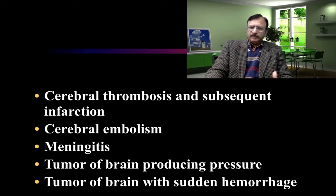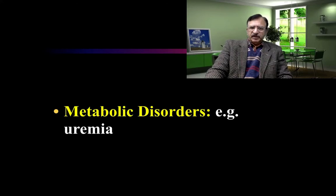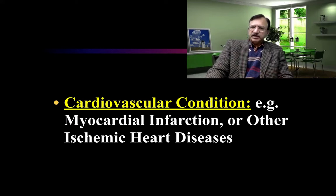There can be more diseases and conditions within the central nervous system. There are also certain metabolic disorders like uremia and hyperglycemia. Cardiovascular conditions are usually most common — myocardial infarctions or other ischemic heart diseases, and other diseases of the heart, congenital or acquired, can be the cause of death.